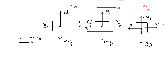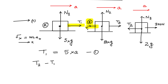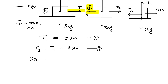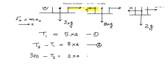Now we write the equation of motion for each block in the horizontal direction. For block A: T1 = 5A (equation 1). For block B, taking the positive direction to the right: T2 − T1 = 8A (equation 2). For block C: 300 − T2 = 2A (equation 3). So we have three equations and three unknowns: T1, T2, and A.